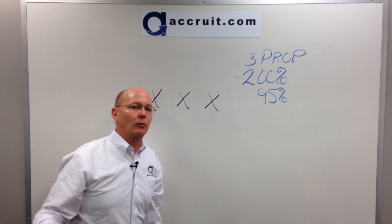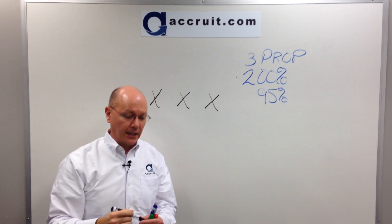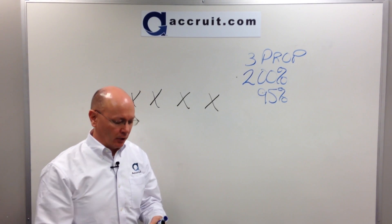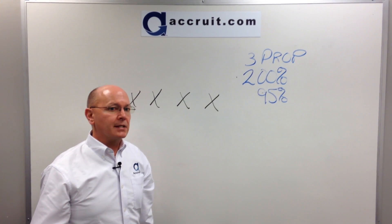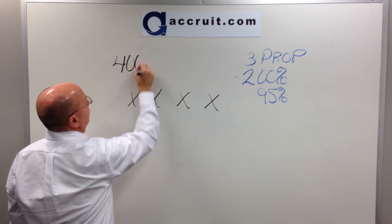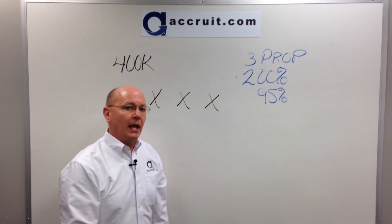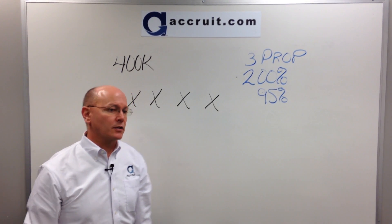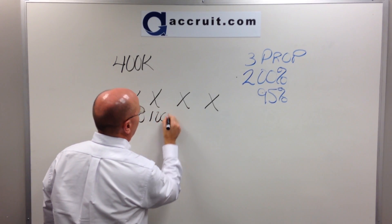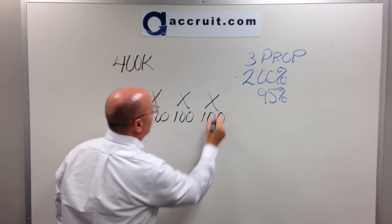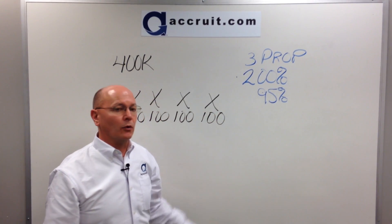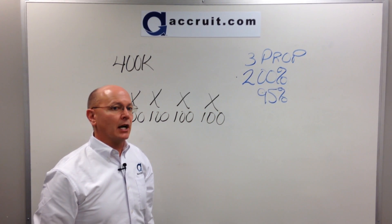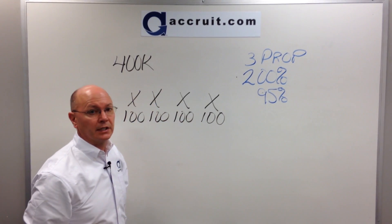Let's assume a taxpayer wants to identify four properties — they cannot limit the list to just three. What the taxpayer will have to do is first know what they sold their front-end property for. Let's say they sold for $400,000. If they identify four properties, they'll have to assign a fair market value to each one. Let's assume the value is $100,000 each. Under the 200% rule, you have to make sure that the total combined fair market value of the four or more properties stays under two times what you sold for on the front end of your exchange.